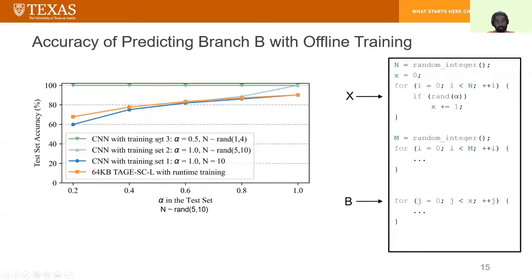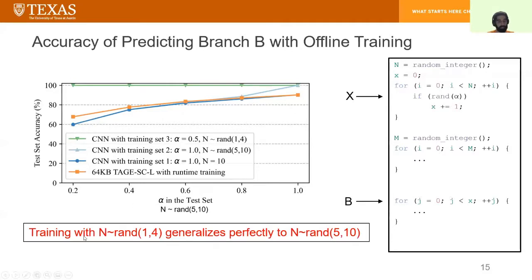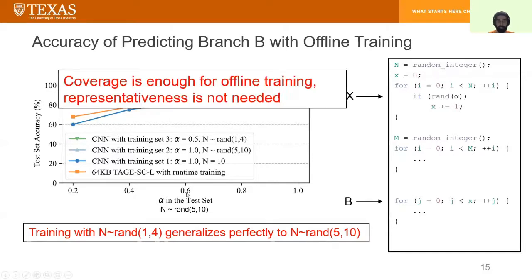But now, if we look at the green line, which uses an alpha of 0.5 for training, we could see that the CNN accuracy is 100% across the board. Note that the range of N in training set 3 was between 1 and 4, and it doesn't overlap at all with the range of N in my evaluation runs. This is evidence for our claim that coverage is enough for offline training and we don't need the exact representativeness for the history patterns that we use for training.